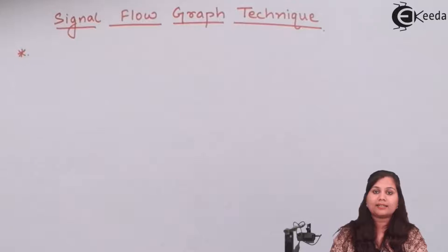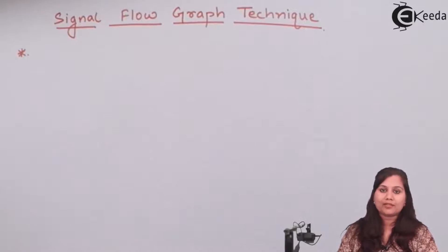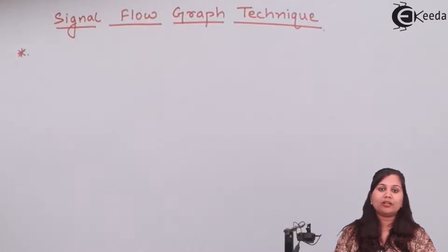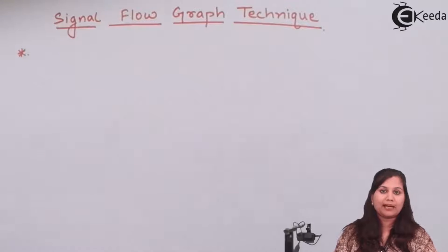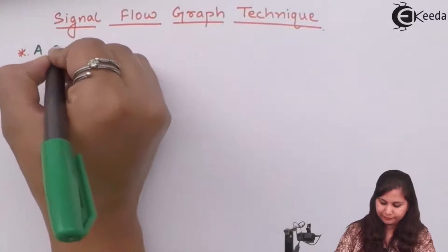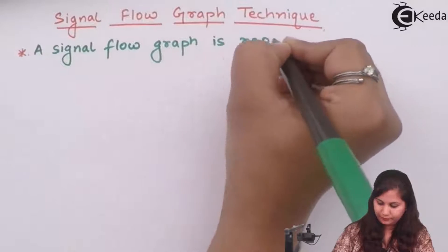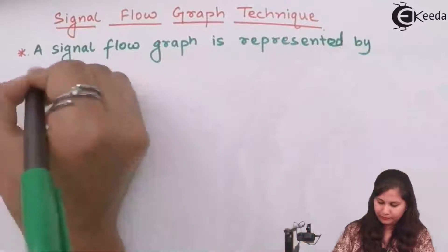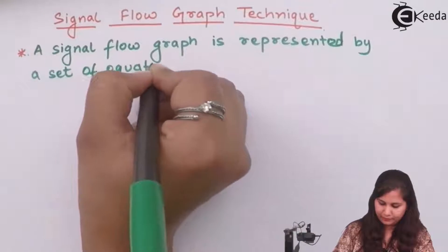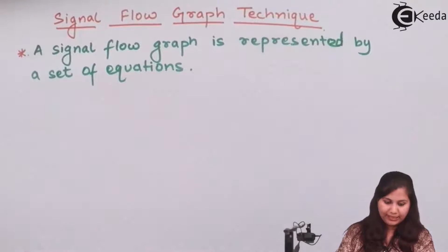In the signal flow graph technique it is a representation of a set of equations. If we apply the Laplace transform on the transfer function we will obtain the differential equations. So those equations can be represented using the signal flow graph technique. We can say that a signal flow graph is represented by a set of equations.